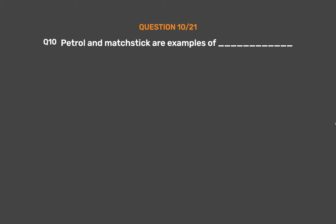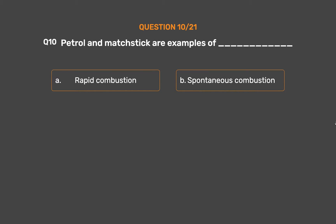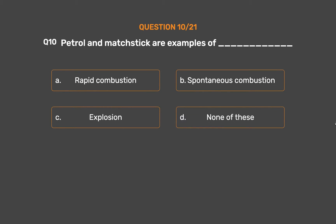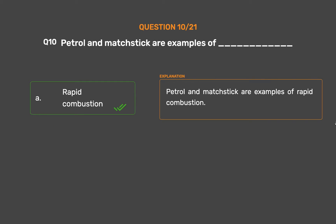Question number 10: Petrol and matchstick are examples of _____. Option A: Rapid combustion. Option B: Spontaneous combustion. Option C: Explosion. Option D: None of these. The correct answer is Option A: Rapid combustion. Petrol and matchstick are examples of rapid combustion.